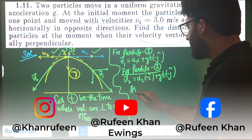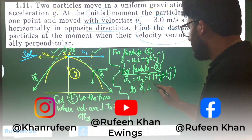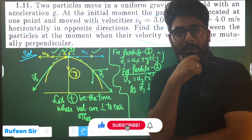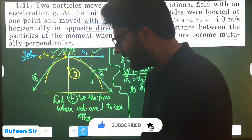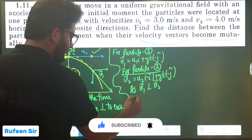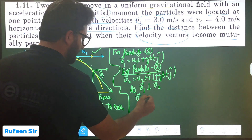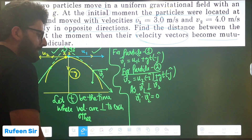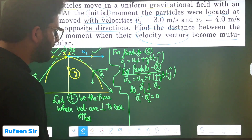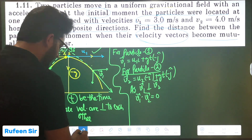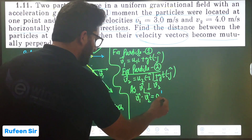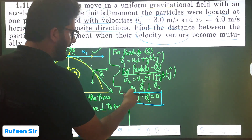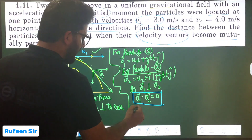As the question states, V1 is perpendicular to V2. If two velocities are perpendicular, their dot product is zero. This is the crunch point of the question. If V1 is perpendicular to V2, then V1 · V2 = 0. Taking the dot product: the î components give U1 × (−U2) = −U1U2, and the ĵ components give (−gt)(−gt) = g²t².